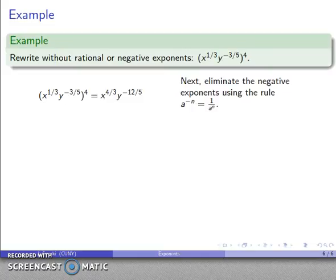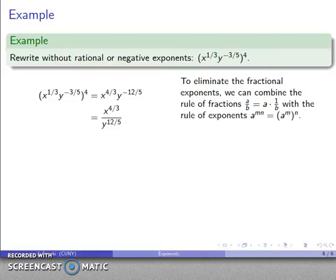Now, how do I handle that? Well, first of all, I can eliminate the negative exponents using the rule a to the power of minus n is 1 over a to the n. So that's gone. And those fractional exponents, I'm going to combine two different rules. One is a basic rule of fractions. a over b is the same as a times 1 over b. And my rules of exponents say that a to the power of n is the same as a to the n raised to the power of n. And what that allows me to do is that allows me to split the fractional exponents into a whole number portion and a 1 over n portion.